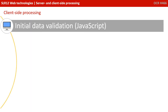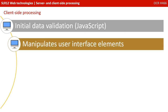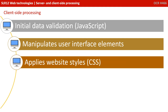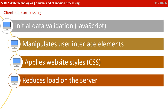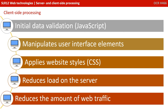Typically, the sort of processing reserved for the client side includes initial data validation done by JavaScript, manipulation of the user interface and elements, and applying website styles via CSS. Everything done on the client side reduces load on the server, and also reduces the amount of web traffic that has to travel between the client and the server.